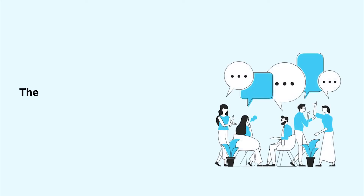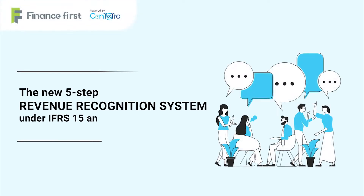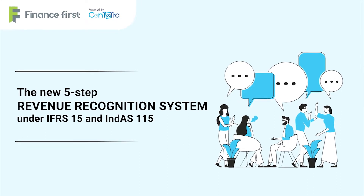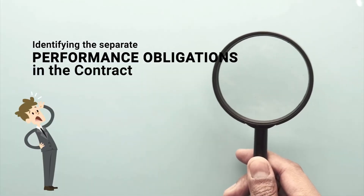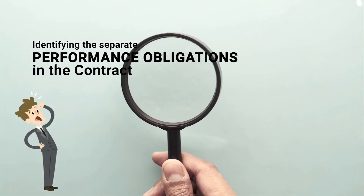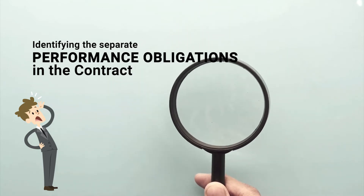The new 5-step revenue recognition system under IFRS 15 and INDES 115 has changed the revenue model for a lot of industries. Out of the 5 steps, the second step — identifying the separate performance obligations in the contract — is one of the most critical ones.